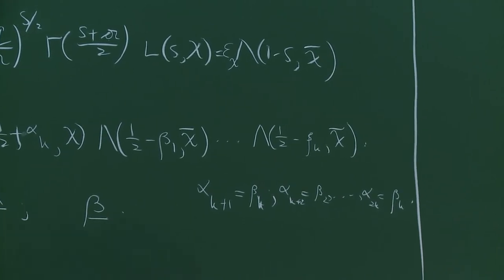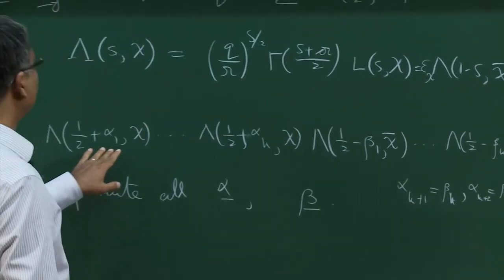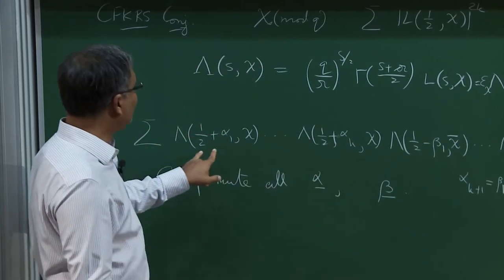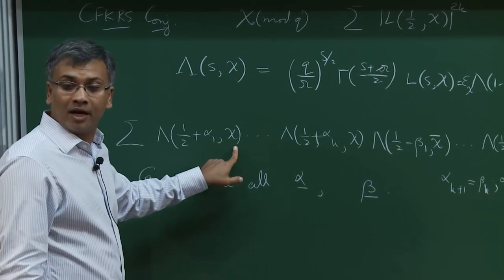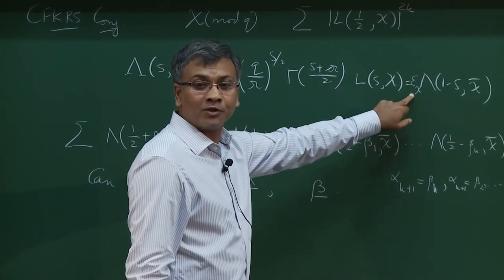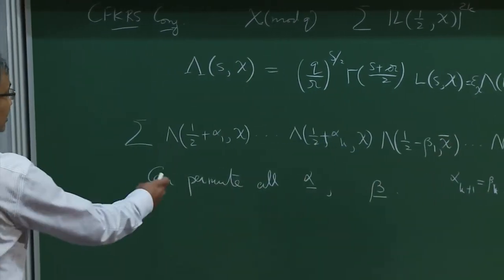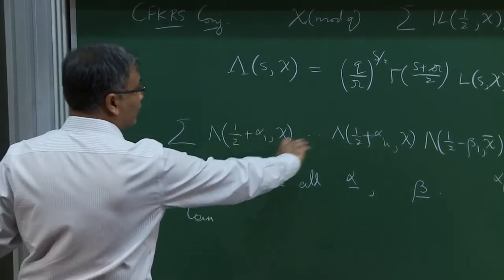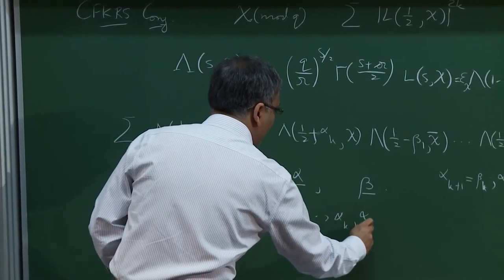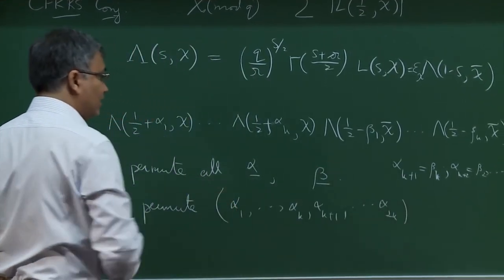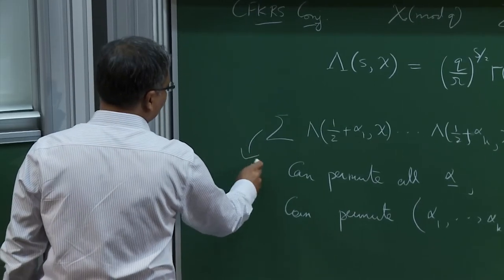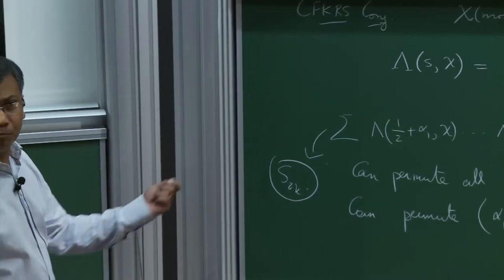There is also a less obvious symmetry: you can swap some alphas with betas using the functional equation. If alpha_1 becomes beta_1 and vice versa, you apply the functional equation twice — once to replace L(1/2 + alpha_1, chi) with L(1/2 - alpha_1, chi-bar), and once more to get back to L(1/2 + beta_1, chi) — and the epsilon factors cancel since epsilon_chi * epsilon_{chi-bar} = 1. Thus the full answer must be symmetric under the full group S_{2k}, permuting all 2k variables.